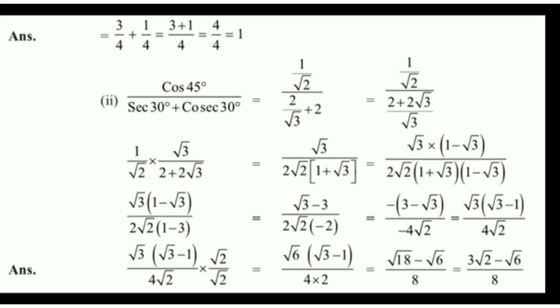The final answer for the second part is (3√2 − √6)/8. Friends, we have to remember all the T-ratios and we should also have a good hold on algebraic calculations.